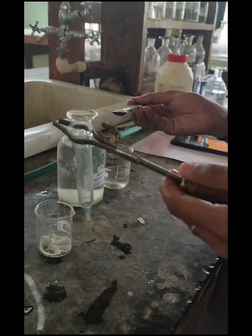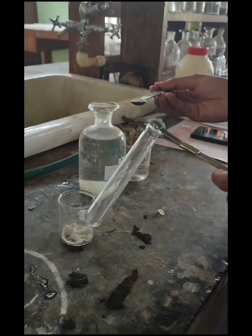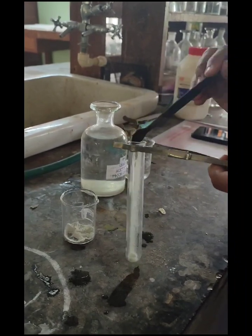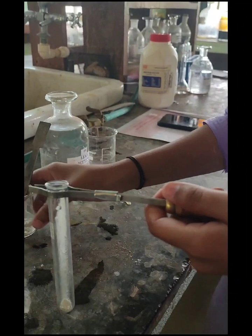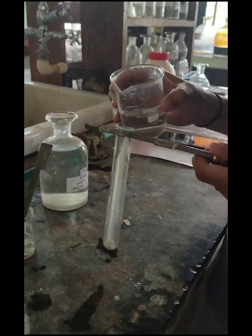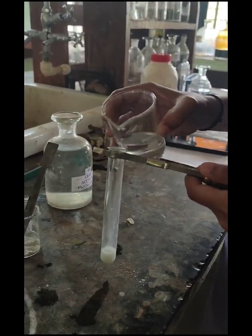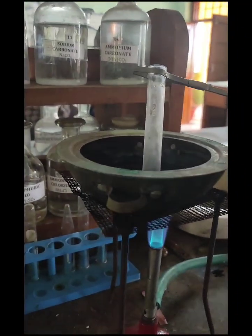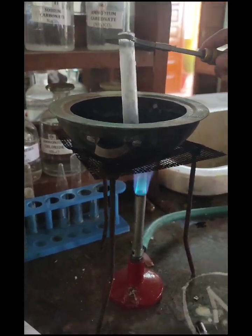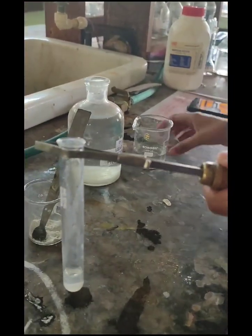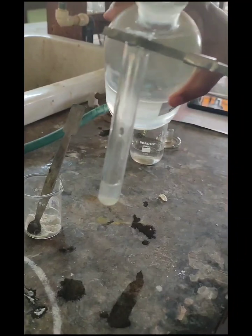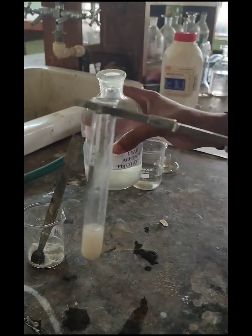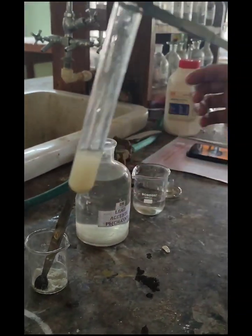For the confirmation test of sulfate, add some amount of mixture in a test tube. To that, add some acetic acid. Heat the solution in a water bath till the CO2 is expelled. Then add 3-4 drops of lead acetate. A white precipitate is formed, indicating the presence of sulfate.